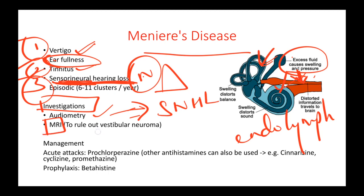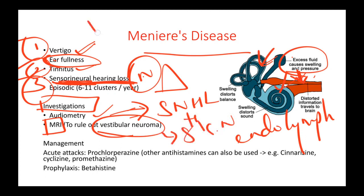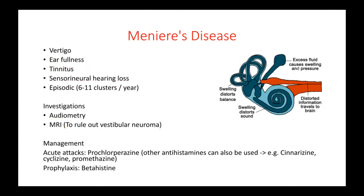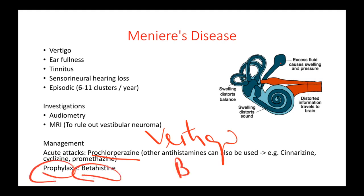You also need to do an MRI to rule out vestibular neuroma, because vestibular neuroma also affects the eighth cranial nerve — just as Meniere's disease affects the vestibulocochlear nerve. Always rule out vestibular neuroma because it is a malignant condition. For management, give the patient antihistamines to manage symptoms such as vertigo, because the fluid will go back to its normal position on its own. For prophylaxis, you give betahistine — beta being the second letter, so it is the second-line drug used for prophylaxis.